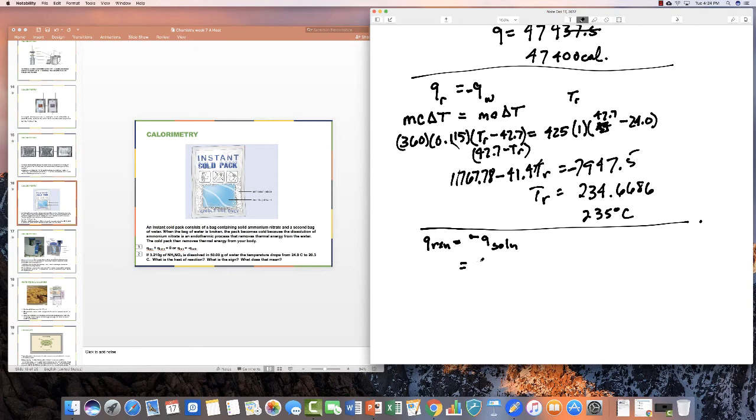The heat of solution is going to be 1, which is the specific heat of water, times 50 plus 3.21 for the mass of everything inside there. You don't have to worry about the specific heat of the ammonium nitrate, times the change in temperature, which is 4.6 degrees. If you do the math on this one, you get 244.766 calories, which to the right number of significant figures is 3, so that's 245 calories. It's going to have a negative.